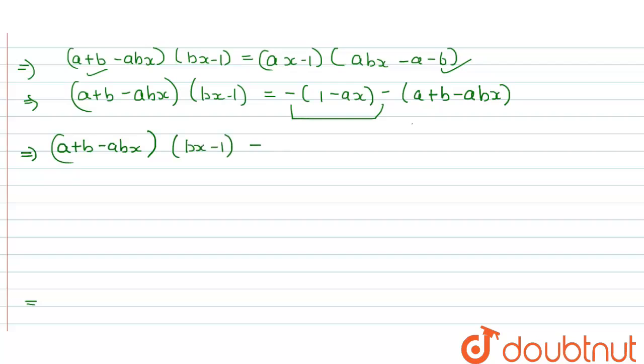bx minus bx minus one minus one minus ax, a plus b minus abx is equals to zero.